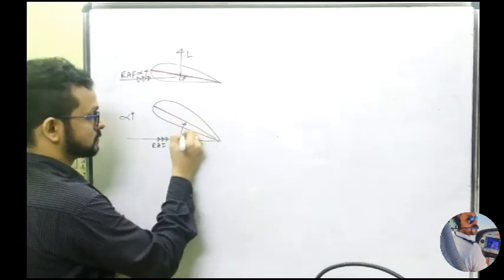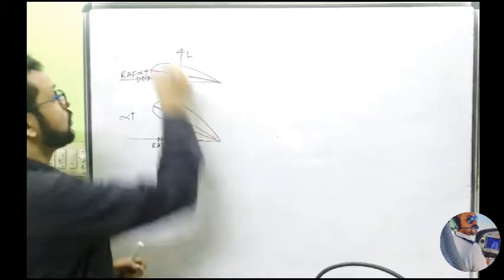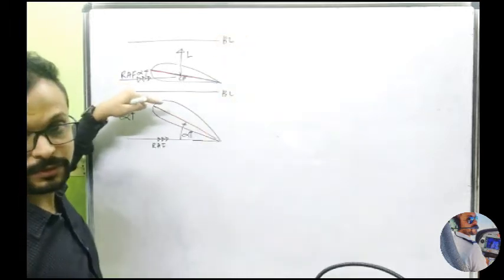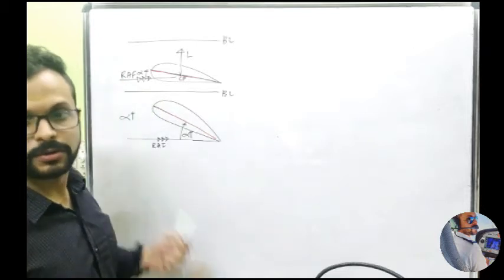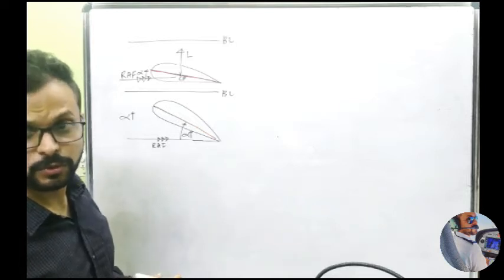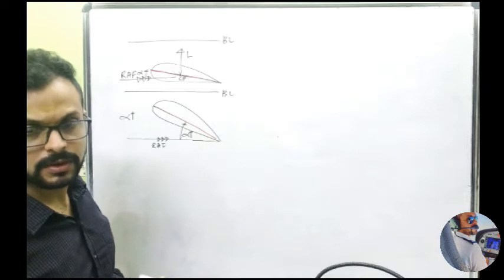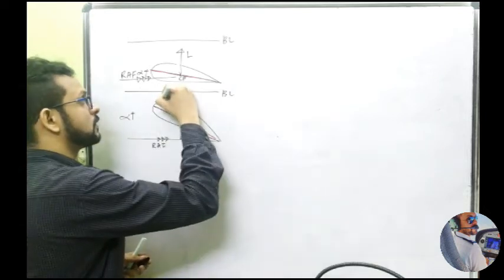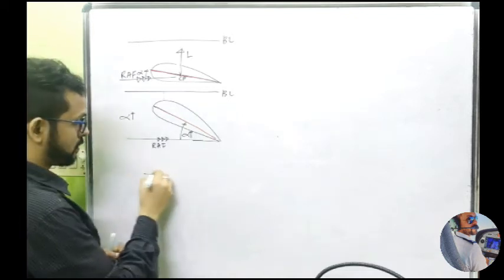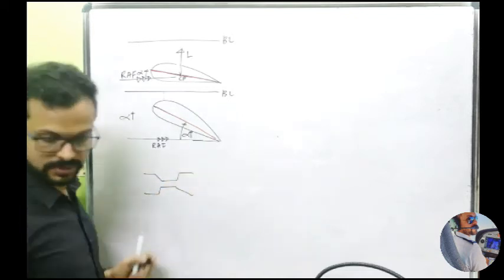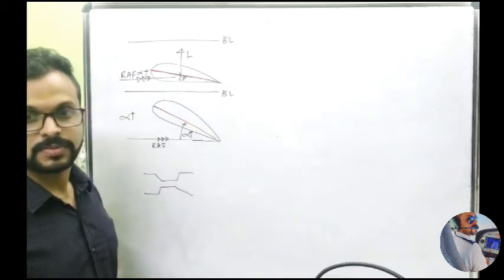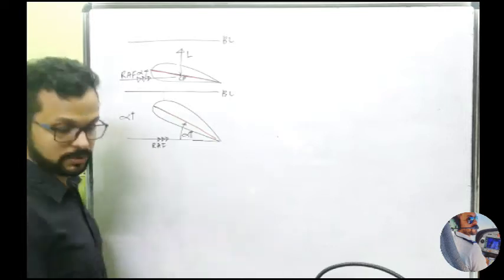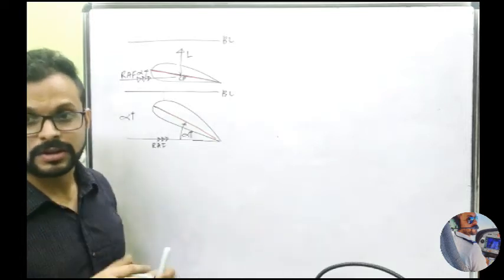When the angle of attack increases, what happens to the area of cross section? This is the boundary layer — the cross-sectional area between the upper surface of your aerofoil and the boundary layer reduces. Again, because of the equation of continuity, we know the static pressure is going to drop further. As the area of cross section reduces, velocity increases, dynamic pressure increases, and to keep the total energy constant, static pressure has to drop. So static pressure drops and the pressure differential increases.